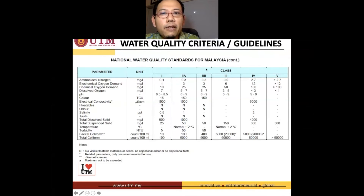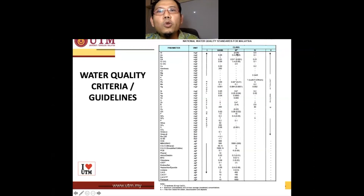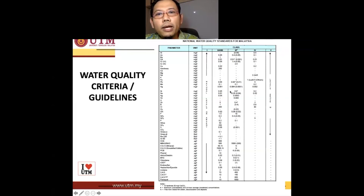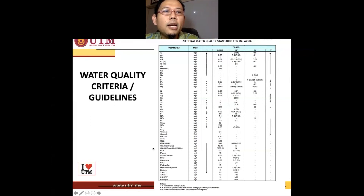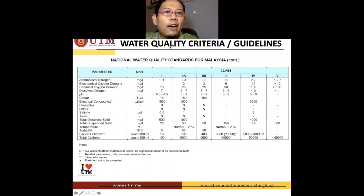Numbers in brackets indicate a 24-hour average concentration. For example, for aluminium to achieve class three, it should not exceed 0.06 milligrams per litre as a 24-hour average. The number outside the bracket is the maximum allowable concentration in the water. You have many parameters, each with defined limits, to determine whether a river satisfies class one, two A, two B, three, four, or five.